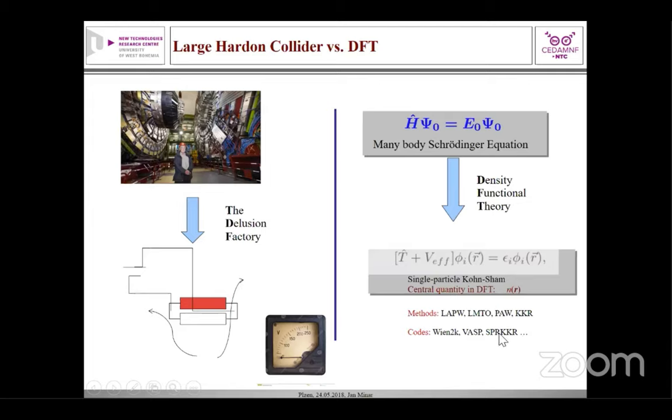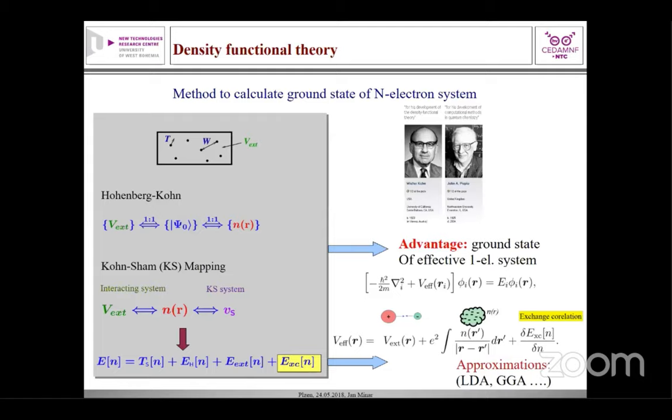It is a non-interacting single electron equation. This equation is implemented in several methods such as LAPW, LMTO, KKR, and many others, and it is implemented in different codes such as WIEN2k, VASP, SPR-KKR, which are used universally. These are open-source codes.